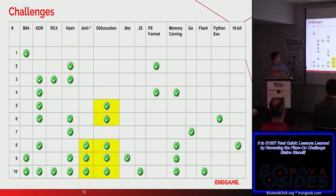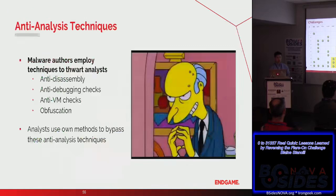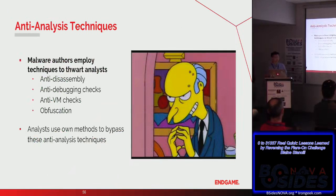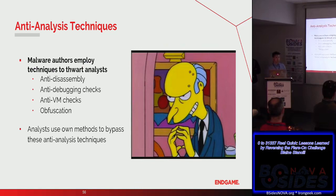Several challenges in the FLARE challenge included anti-analysis and obfuscation. Anti-analysis techniques are employed by malware authors to hinder analysts. Some examples include anti-disassembly, anti-debugging checks, anti-VM checks, and obfuscation. In response, analysts employ their own methods to bypass these techniques — you can think of it as anti-anti-analysis.